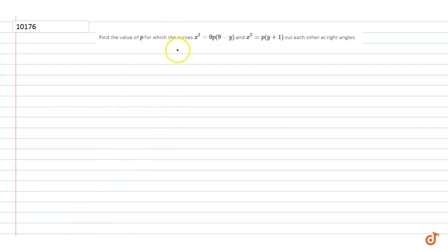In this question, find the value of p for which the curves x² = 9p(9-y) and x² = p(y+1) cut each other at right angles.